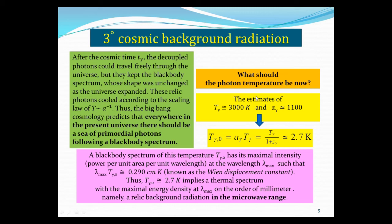So what should the temperature be now? We can estimate: if the decoupling time was 3,000 K with a redshift ratio factor of 1,100, and since temperature scales as 1 over A, the present temperature should be the scale factor at decoupling times the temperature at decoupling. So 3,000 divided by 1,100 gives 2.7 K—roughly 3 degrees above absolute zero.